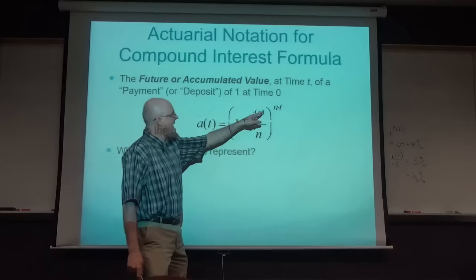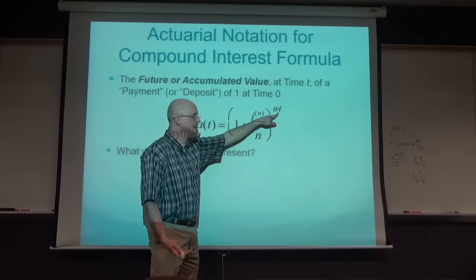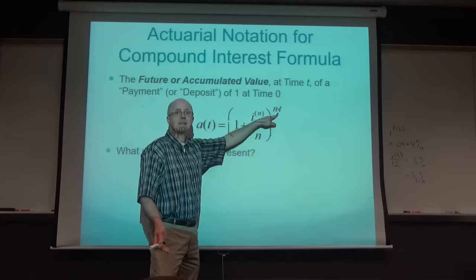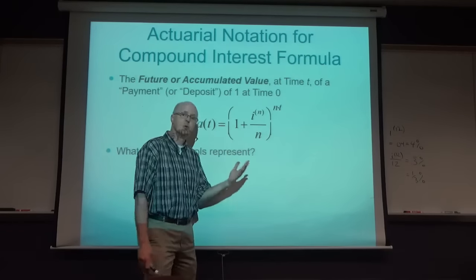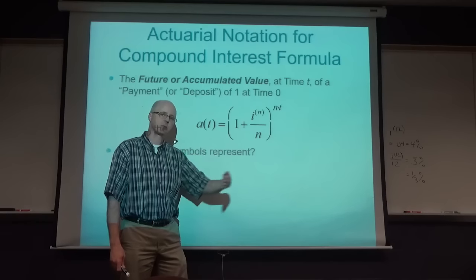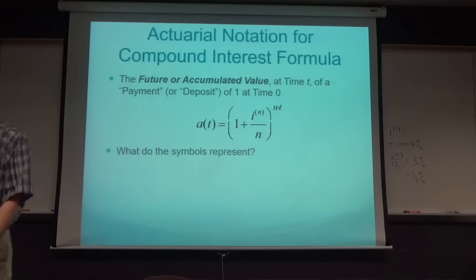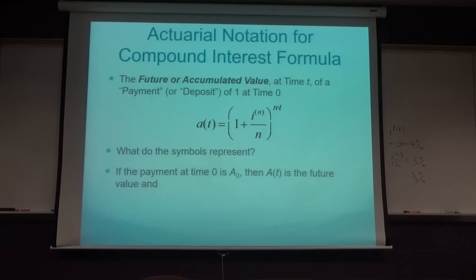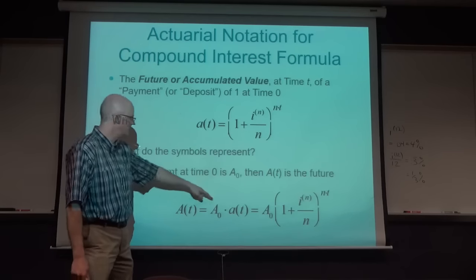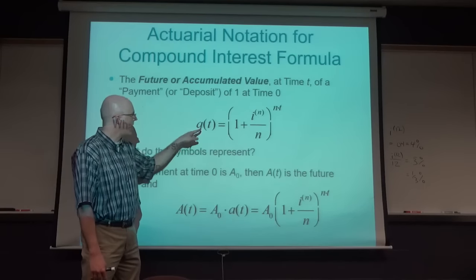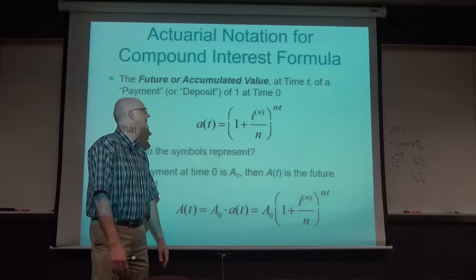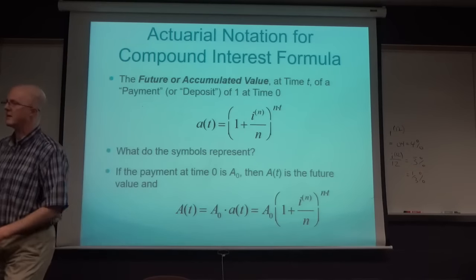This actually makes the money grow by more than 4% over the entire year - that's the so-called magic of compound interest. N times T (the exponent) also represents the total number of times you compound interest over T years: e.g., N=12 and T=2 gives 24 compounding periods. If the initial payment is something other than 1 (call it A₀), just multiply a(T) by A₀ to get the future value.